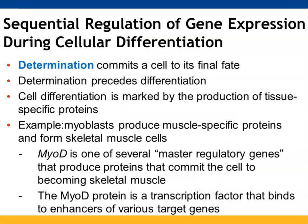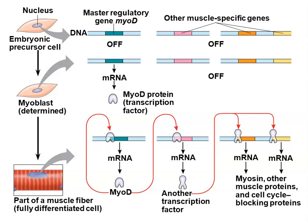Determination is when a cell has been committed to a certain type of tissue or function. Determination occurs before differentiation. Determination tells you what type of cell you're going to end up being; differentiation is the actual outcome — when you start producing proteins specifically needed by certain types of tissues. The example here is myoblasts, which are able to produce proteins specific to muscles and form skeletal muscle cells. MyoD is a very important master regulatory gene that commits that cell to becoming a skeletal muscle cell. That protein is a transcription factor that can bind to enhancers of target genes needed in those muscle cells.